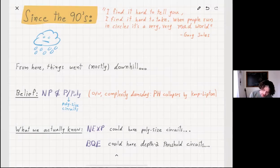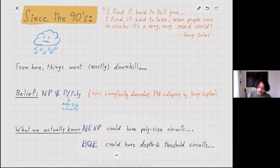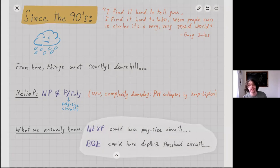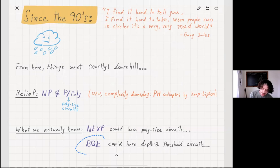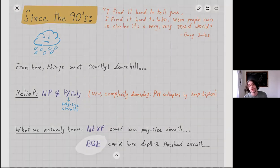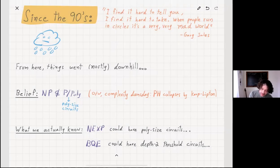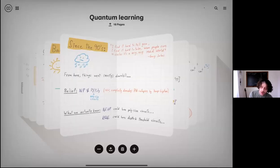But despite believing these strong statements, for all we know, the class NEXP, non-deterministic exponential time, could have polynomial-sized circuits. This sounds completely ridiculous, but we just don't know how to prove that this is not the case. And if we're going to the quantum realm, then BQE, which is the exponential time analog of BQP, quantum polynomial time, could have depth two threshold circuits, which are very simple discrete analogs of neural networks. We strongly believe that this is not the case, but we don't know how to show that.